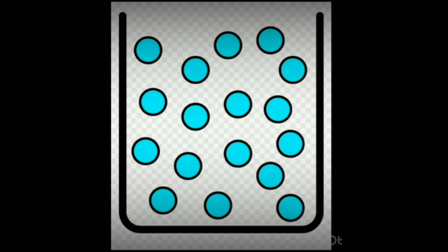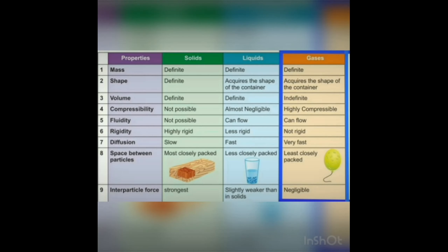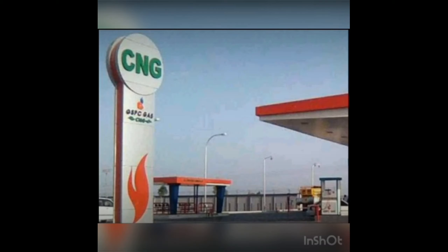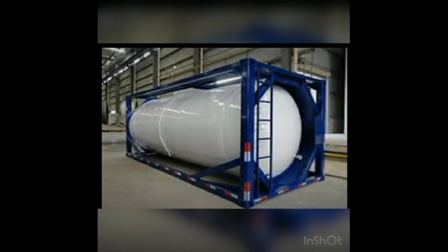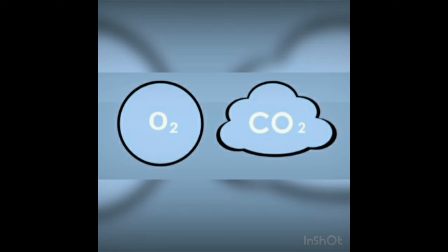Properties of gases: gases have definite mass and acquire the shape of the container like liquids, but do not have definite volume. At a nearby CNG pump, the gas is stored in cylindrical or spherical containers. From this observation, gases neither have a fixed shape nor a fixed volume.